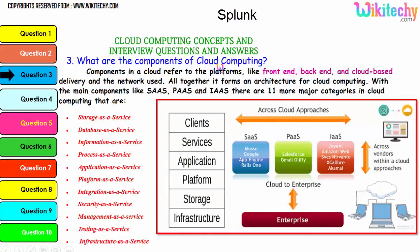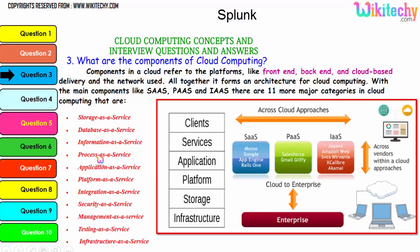Let's talk about the components of cloud computing. Components in a cloud refer to platforms like the front-end, back-end, cloud-based delivery, and the network used. Together they form the architecture for cloud computing. The main components are Software as a Service, Platform as a Service, and Infrastructure as a Service. There are 11 major categories in cloud: storage as a service, database as a service, information as a service, process as a service, application, platform, integration, security, management, testing, and infrastructure.